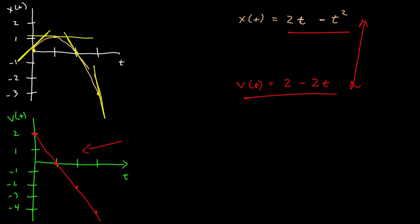This is telling me that the slope of the tangent line is positive at t is equal to 0, which is consistent with what I know, and it's 0 at t is equal to 1.